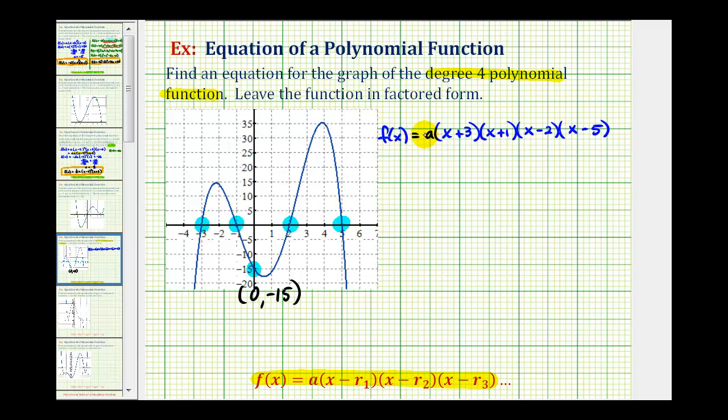And now to find the value of a, we'll use this point here. If the function contains the point zero, negative fifteen, this means f of zero must equal negative fifteen. So, we'll substitute zero for x, and set this function value equal to negative fifteen.